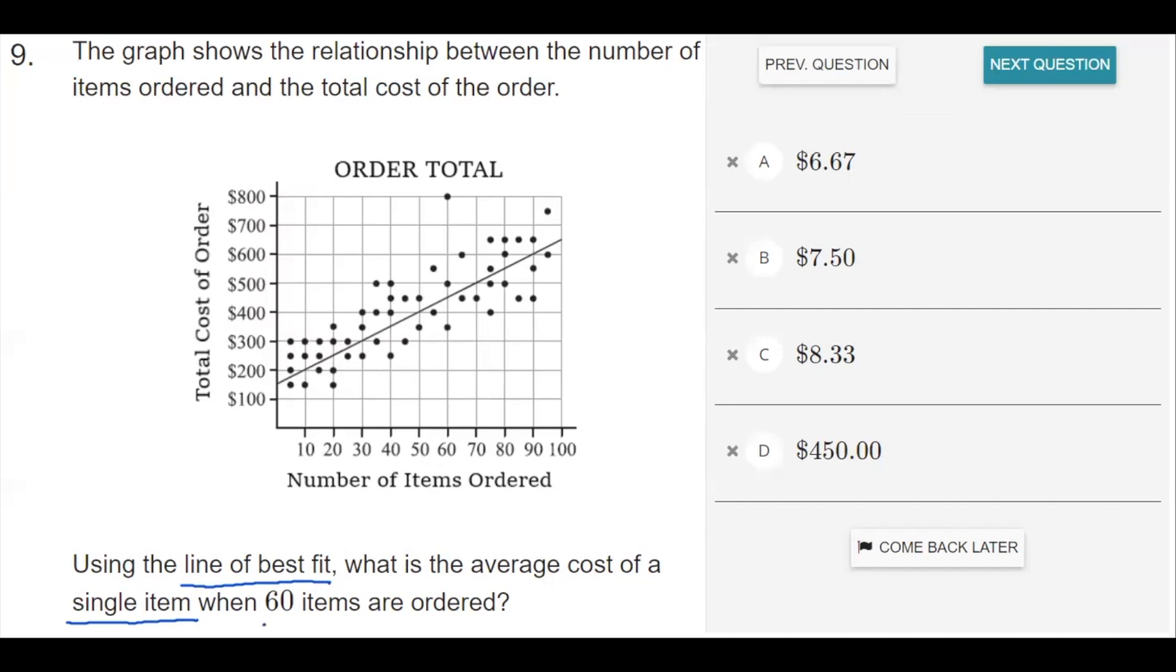So it's asking us to find the average cost of a single item when 60 items are ordered. So let's look at 60. We go up. According to the line of best fit, that would be this value right here.